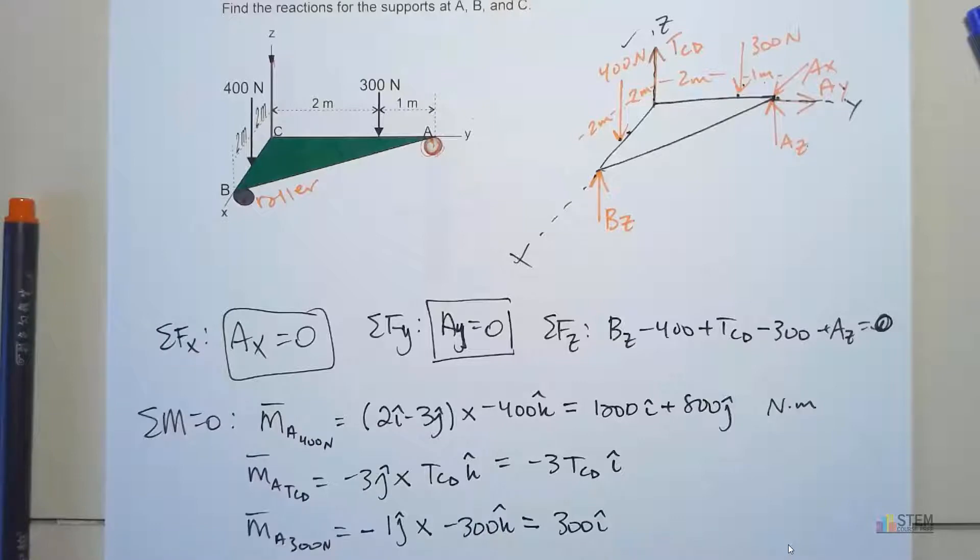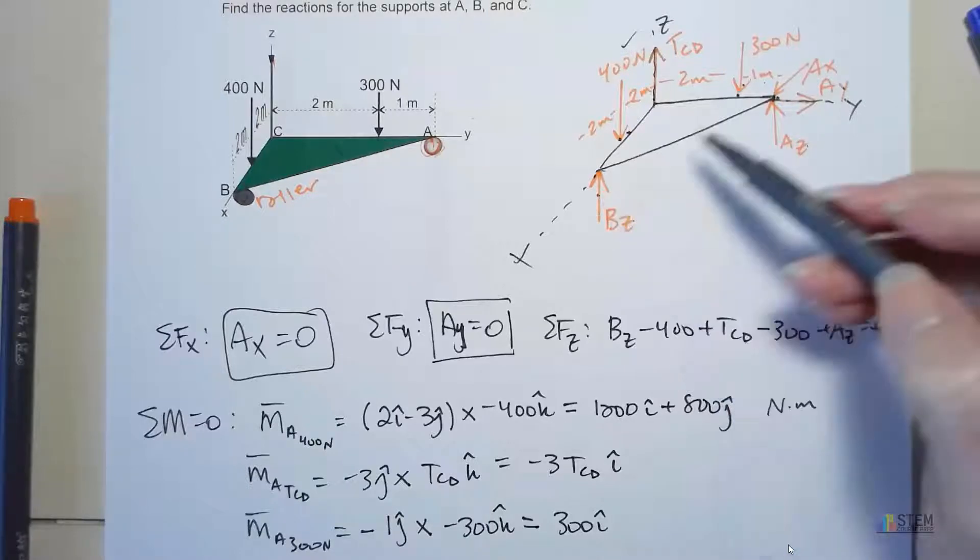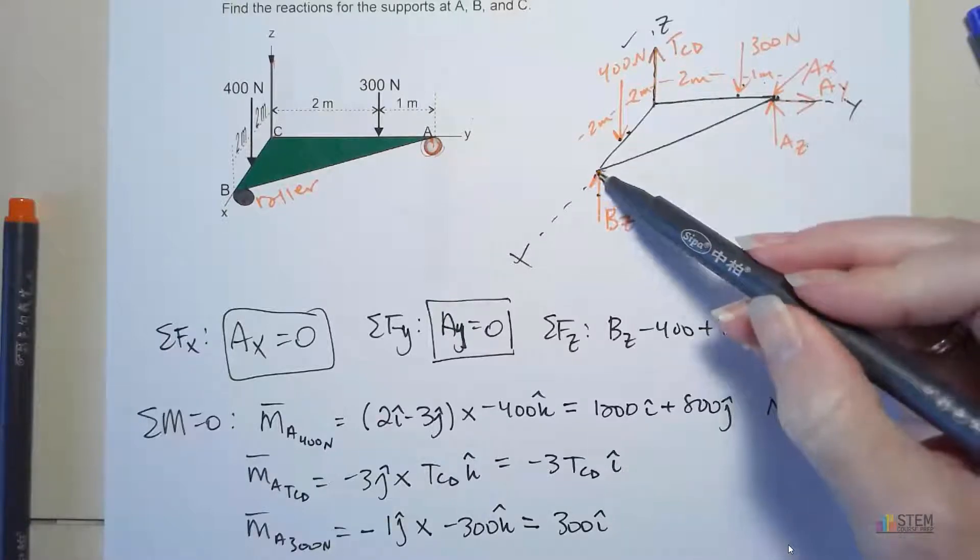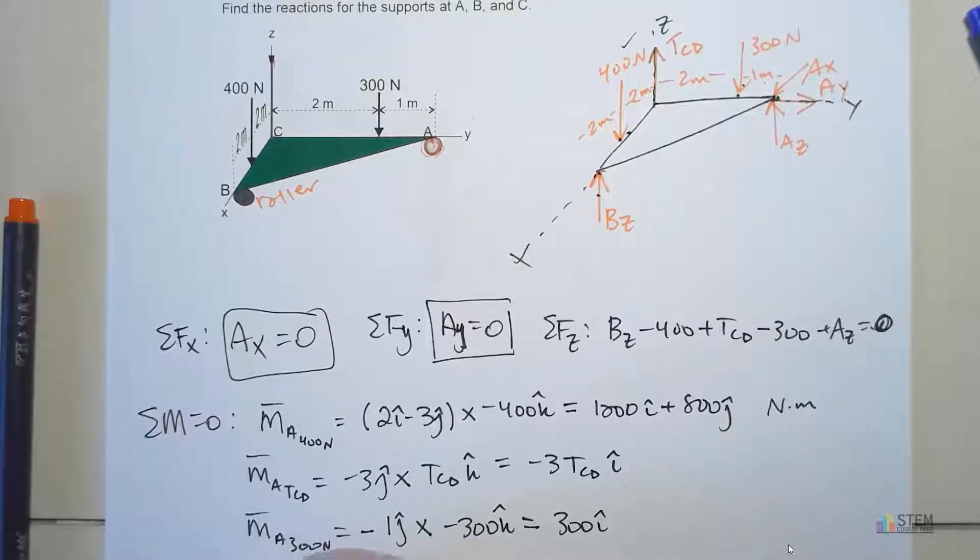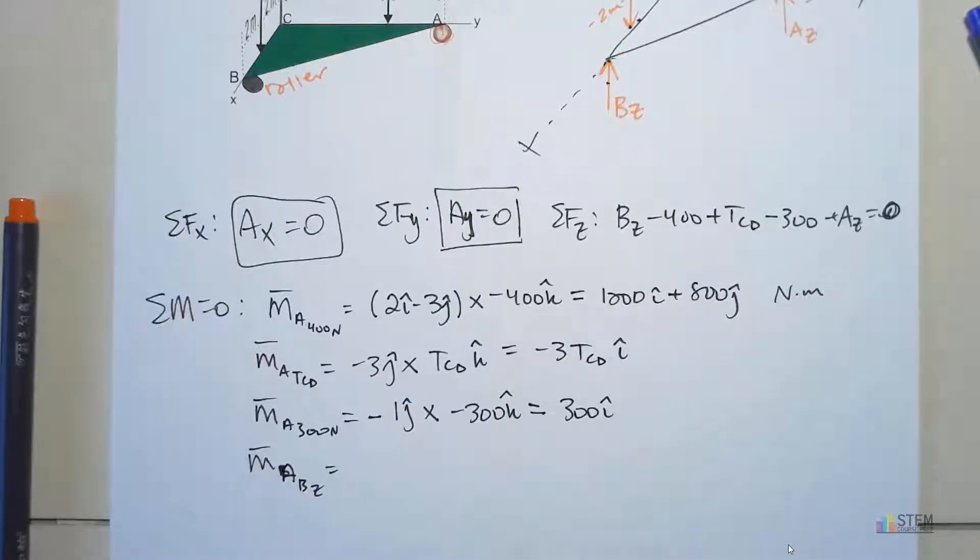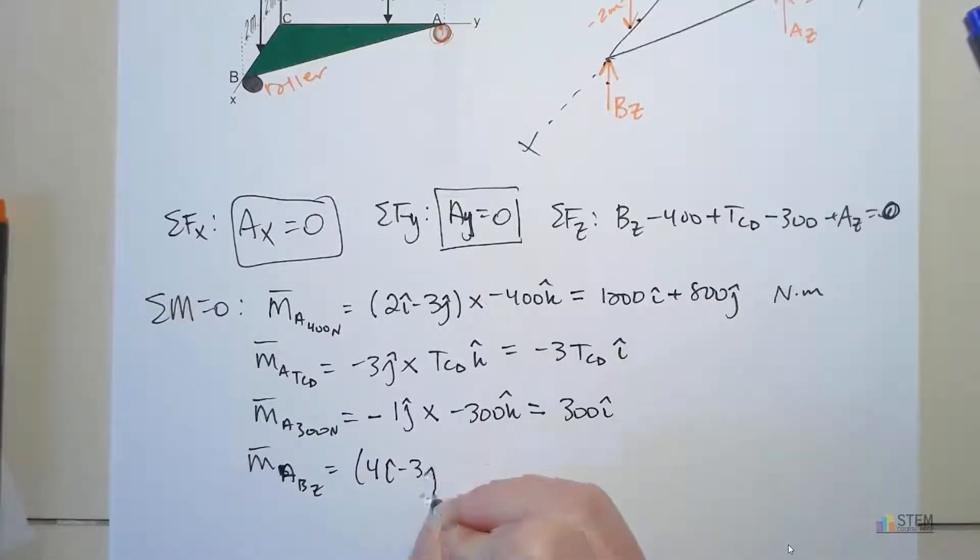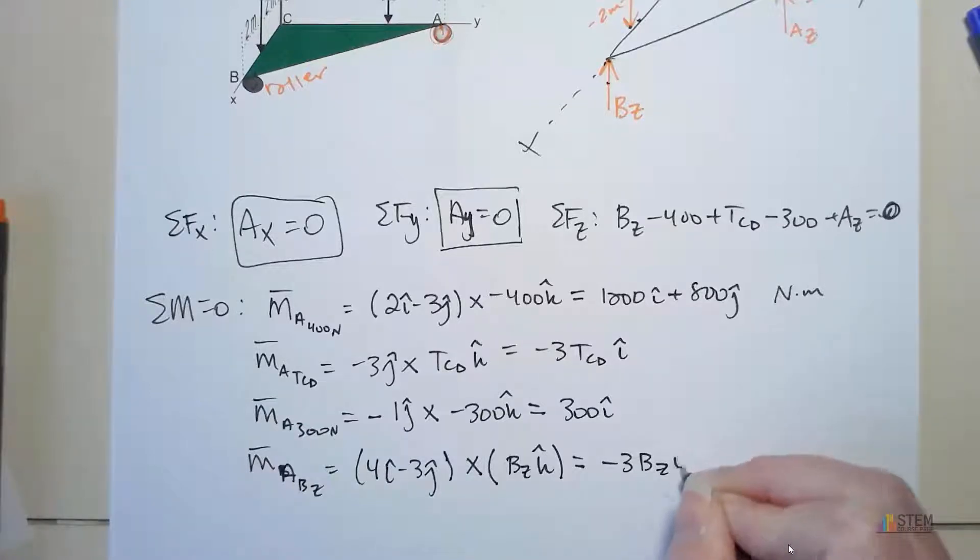One more of these. We need to look at BZ. AZ is going through point A so we don't have a moment there, but we do need to look at BZ. This is a moment about A for BZ. Our position vector needs to go from A over to B. That position vector is going to be 4I minus 3J. We're going to cross that with BZK. That gives you negative 3BZI minus 4BZJ.